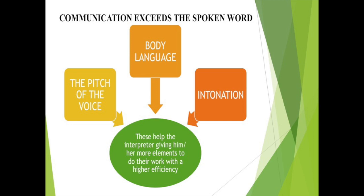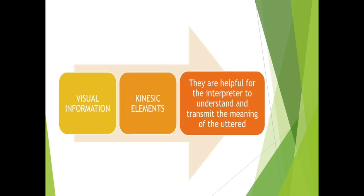In the same way, if the semantic information is not quite precise or turns ambiguous, the visual information can work as endorsement, so that the kinesic elements are more helpful for the interpreter to understand and transmit the meaning of what is uttered.